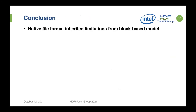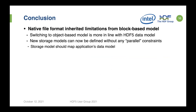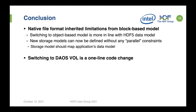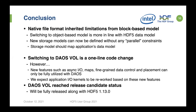In conclusion, the native file format has inherited limitations from the block-based model. Switching to an object-based model is more in line with HDF5's data model — no more parallel constraints, and much better mapping to the application's data model. Switching to the DAOS VOL is a one-line code change; however, using features like async IO, maps, or finer-grained data control requires more code changes. It will be fully released along with HDF5 1.13, currently still in release candidate.